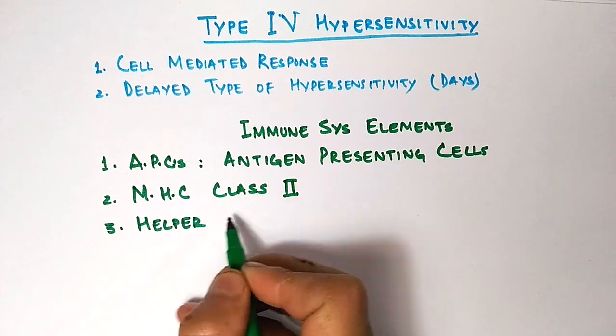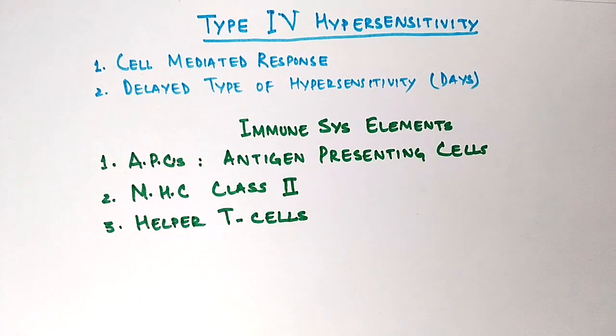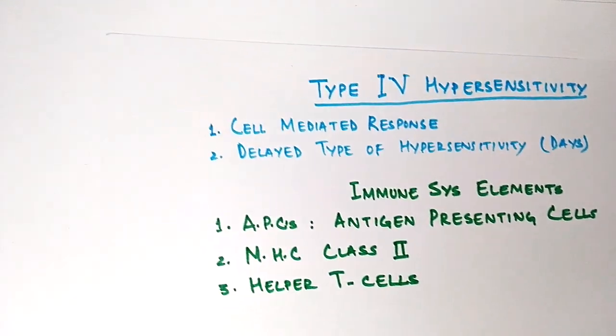Last one is helper T cells. These cells are from our immune system which mediate this hypersensitivity reaction. First of all, let's see what these helper T cells are, because we have two types of T cells in our body but only helper T cells are able to mediate this hypersensitivity reaction.